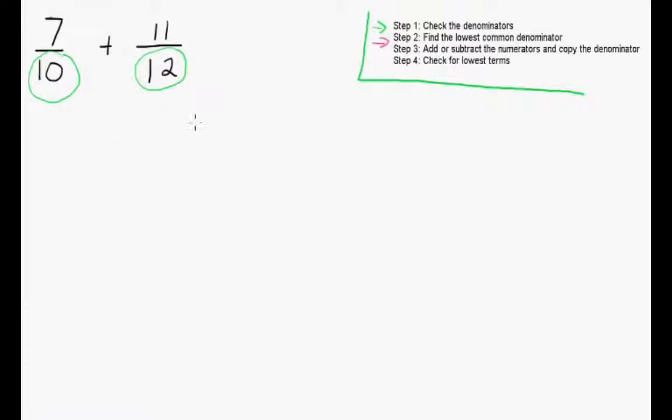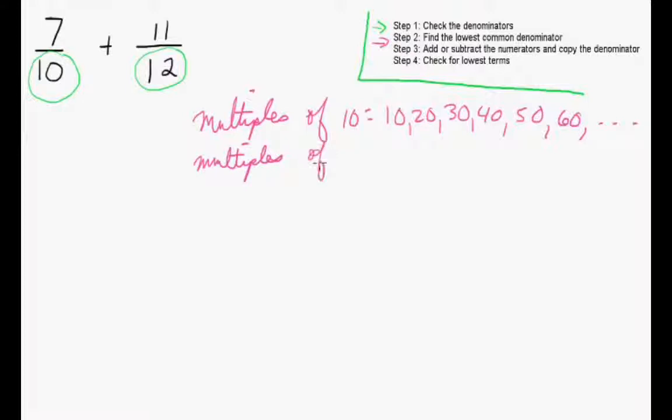Step 2 being finding the lowest common denominator. In order to do that, we need to list the multiples of both denominators. So, the multiples of 10 are 10, 20, 30, 40, 50, 60, and so on.